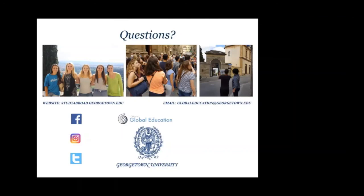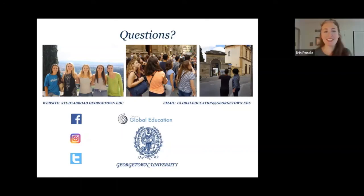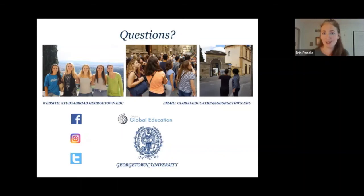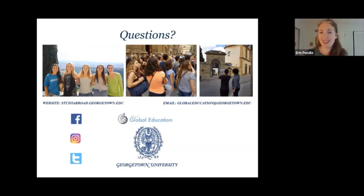Question: How can we make an appointment with you or another OGE advisor? You can do so from our website at studyabroad.georgetown.edu — look for the appointment link. You can also email me and I'm happy to set one up. I'm constantly updating my calendar with availability, so if you don't see an appointment, it probably just means I need to open more slots up. If the available slots don't work with your schedule, always email me and I'll make time for us to chat via Zoom or over the phone, whatever works best for you.